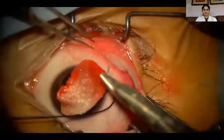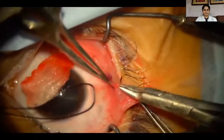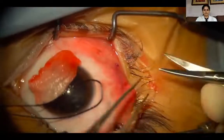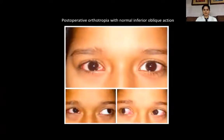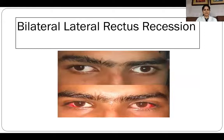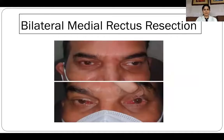The conjunctiva is then closed with 8-0 polyglactin sutures or with glue. Inferior oblique weakening procedures do not affect the horizontal deviation and give good results post-operatively. This procedure reduces the inferior oblique overaction and collapses the V pattern. This technique can be combined with bilateral lateral rectus recession, unilateral recess-resect procedures, and bimedial resections.